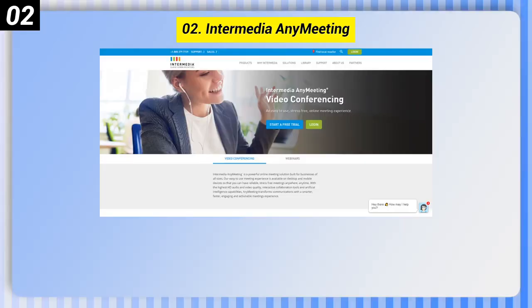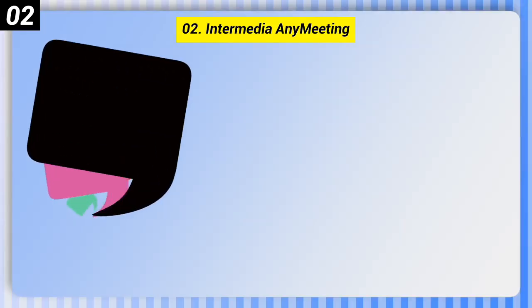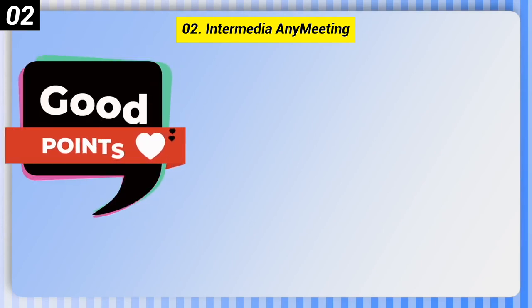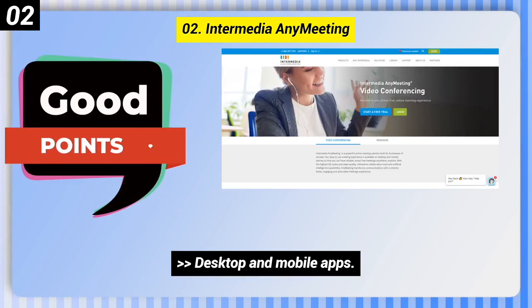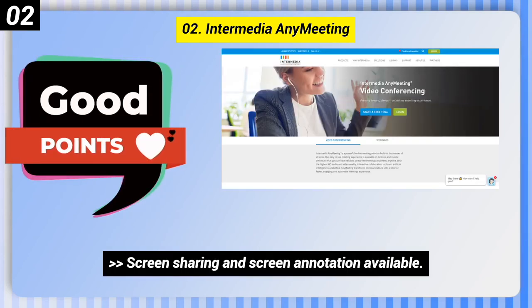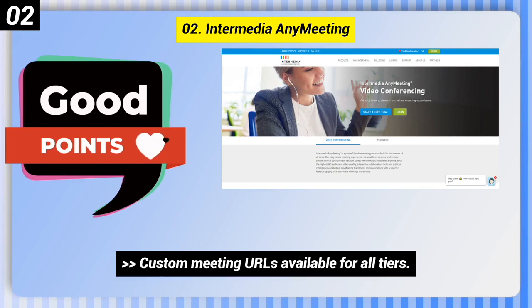Number 2: Intermedia Any Meeting. Here are some good points of this one. Desktop and mobile apps available. Screen sharing and screen annotation available. Custom meeting URLs available for all tiers.